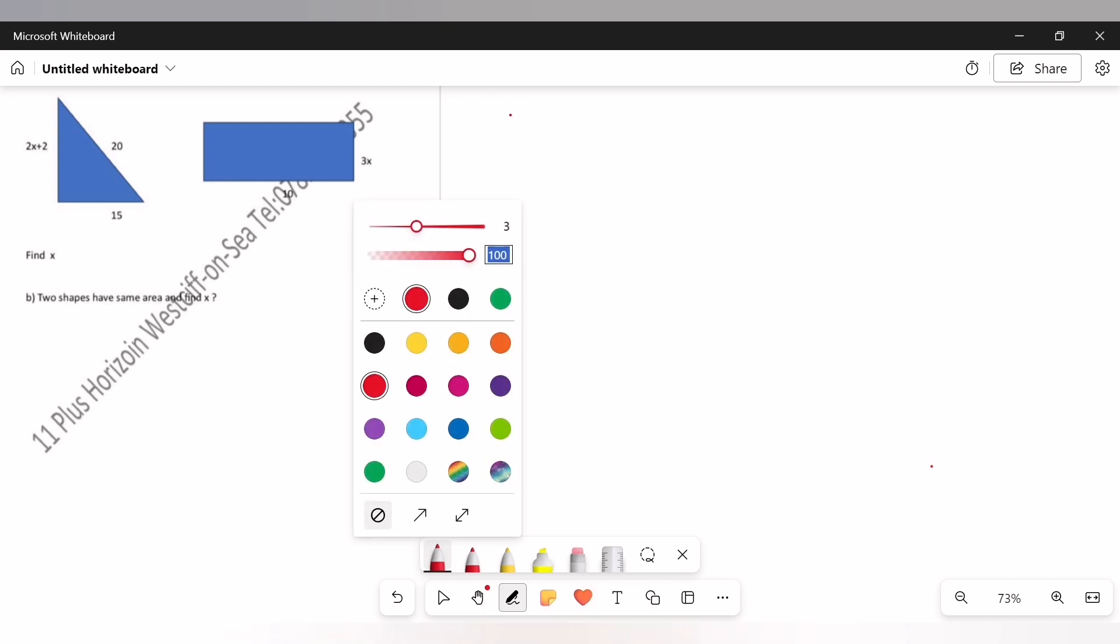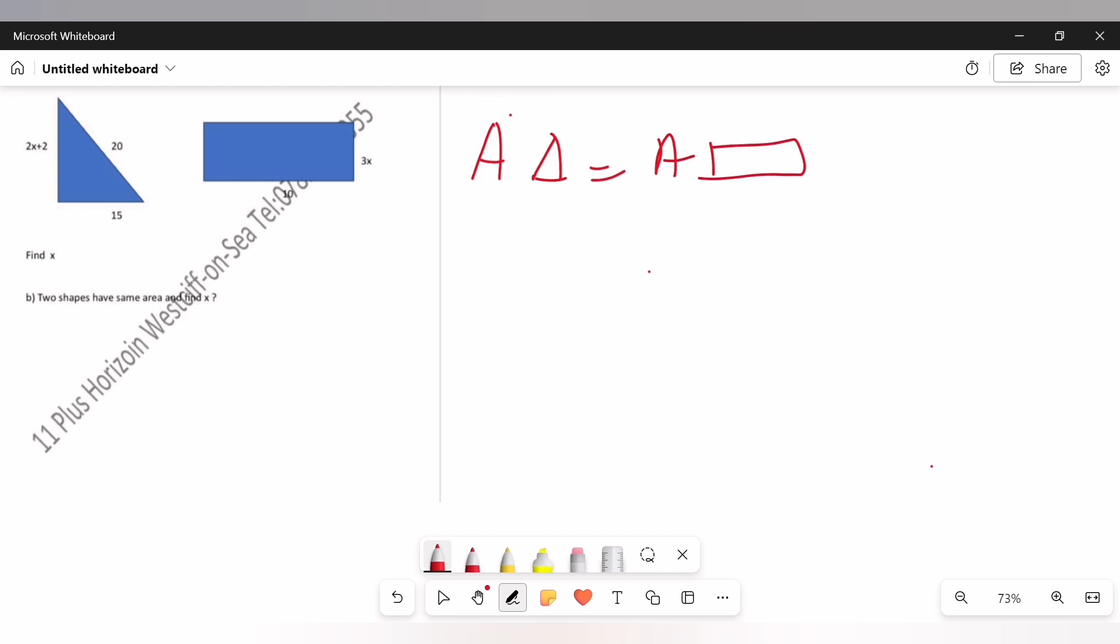You know the area of triangle, you know the area of rectangle, so we need to just simply substitute their values. If I say that the area of triangle equals the area of rectangle, the area of triangle is half times base times height, and the area of rectangle is length times width.